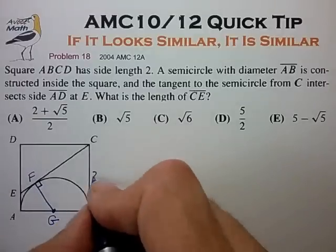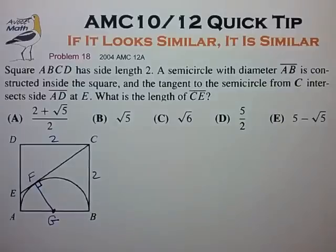The side length of our square is 2, so let's draw that in. AB is also equal to 2, so we know these radii are all of length 1.